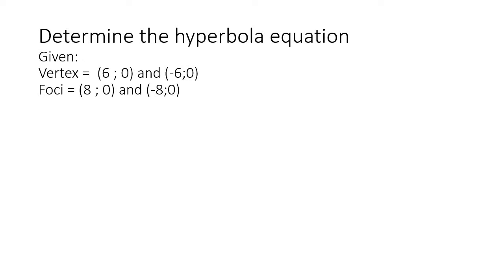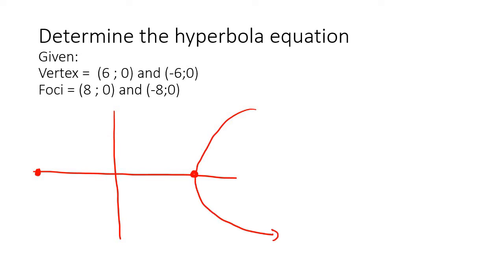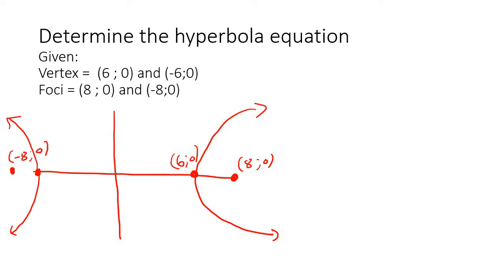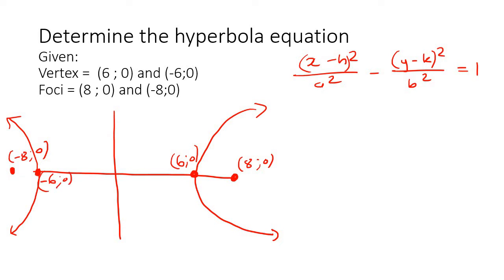In this example, they give us the vertex and the foci. The vertex is at (6, 0) and (−6, 0). Because the vertex is on the x-axis, we know this is going to be a horizontal hyperbola. The foci are at (8, 0) and (−8, 0). We can see that if the vertices are at ±6, the center is exactly at (0, 0), so h and k are both 0. Now a is the length from the center to the vertex, so a equals 6.